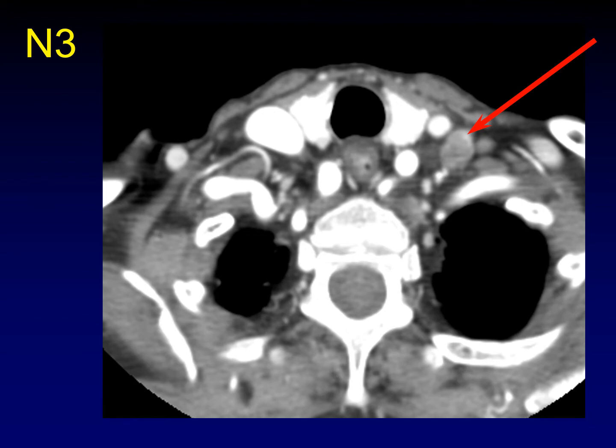For N3, you need to be below the larynx, below the inferior margin of the cricoid cartilage. Here is thyroid gland — we're below the level of the larynx. That lymph node is indicative of N3 disease because it's so low down in the neck.